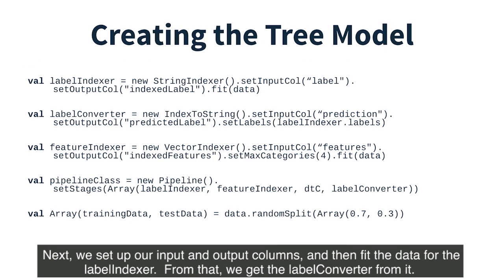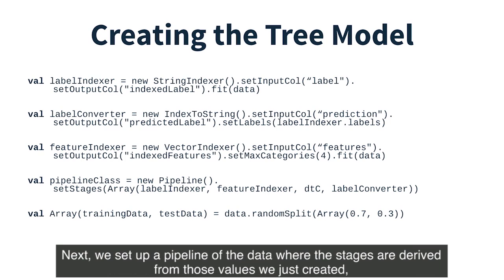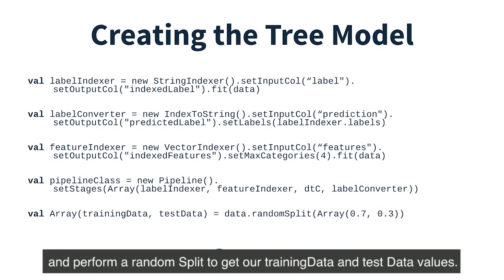Next, we set up our input and output columns, and then fit the data for the label indexer. From that, we get the label converter. Then we set up a feature indexer from vector indexer, which we perform a fit call on with our input data. Next, we set up the pipeline of the data, where the stages are derived from those values we just created, and perform a random split to get our training data and test data values.